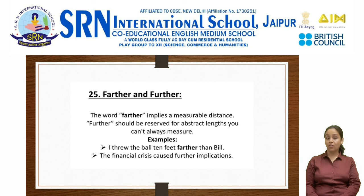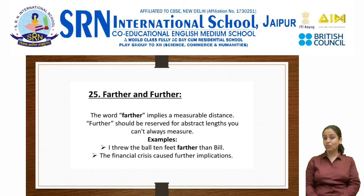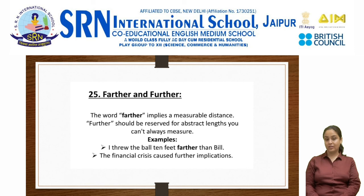The next error is farther versus further. The word farther implies a measurable distance. Further should be reserved for abstract lengths you can't always measure. For example: I threw the ball 10 feet farther than Bill — the distance is measurable, so farther is used. The financial crisis caused further implications — this is abstract, so further is used.